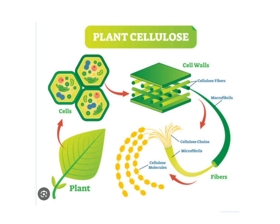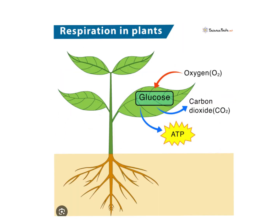So when a plant makes its own glucose, it can use it for starch, which is that long-term storage, or it can use it for cellulose, which makes up the cell walls. But a lot of the glucose will be used by the plant for doing basic cellular respiration, where we're going to have glucose and oxygen going into the equation.